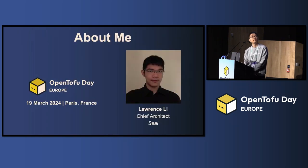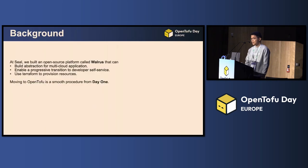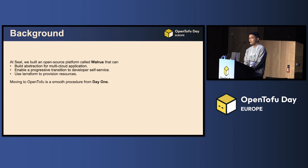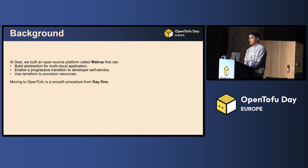This is me. I'm Chi Articat from Siu. At Siu, we build an open source software called Waris. It helps to build application abstraction that works for multi-cloud. We also use IaC technologies like Terraform for resource provisioning, allowing the operations team to make a progressive transition to developer self-service.